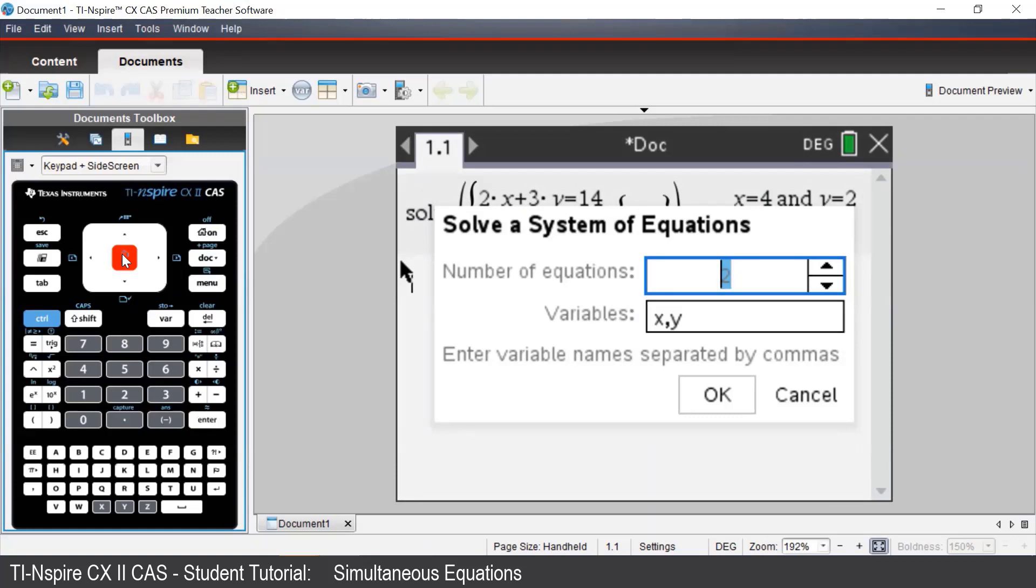To tell the TI Inspire that we would like three equations with three unknowns, we must enter a 3 into the first field, and then tab down to the next field. The TI Inspire will automatically update with three variables.